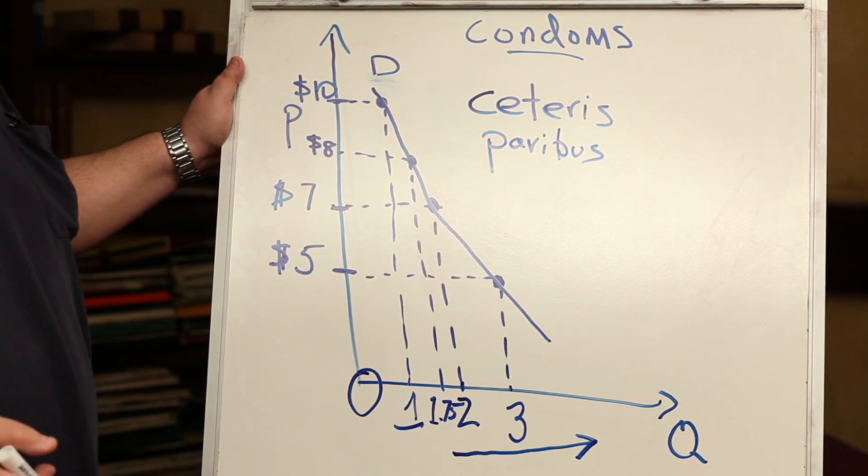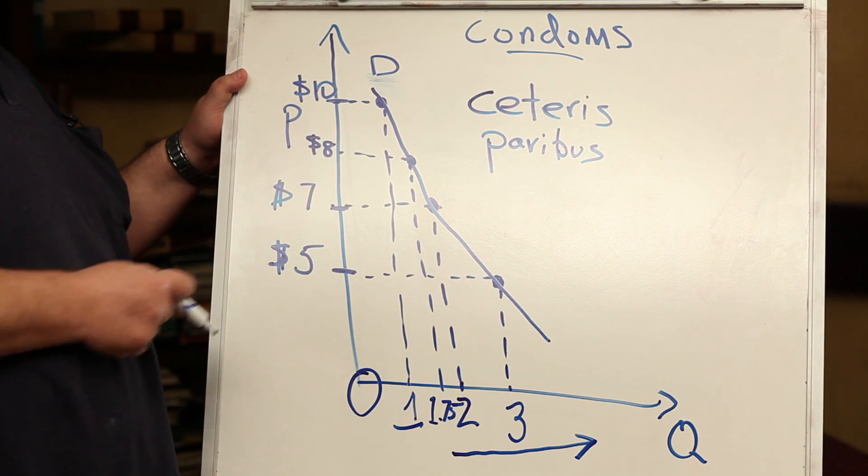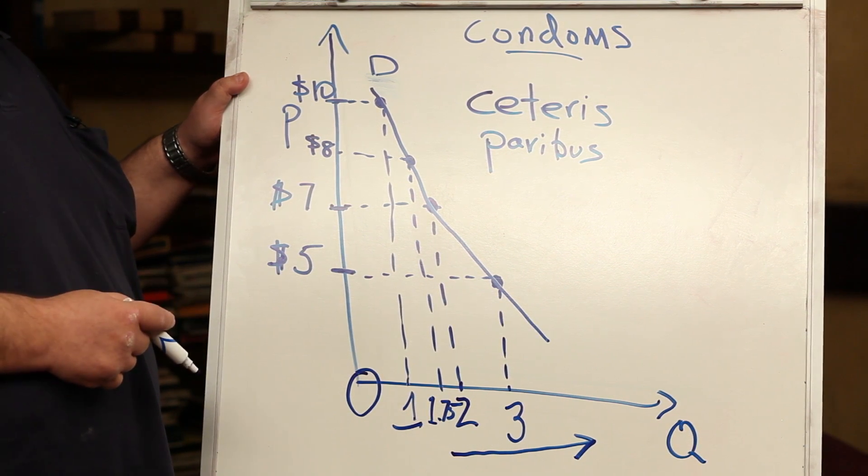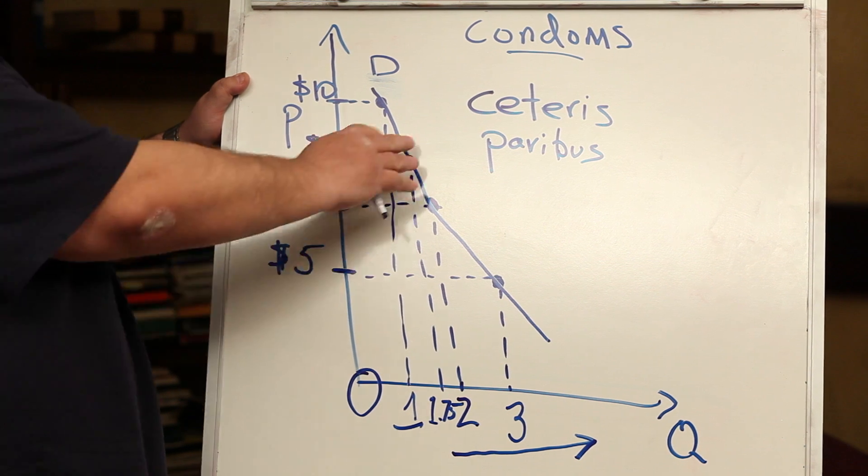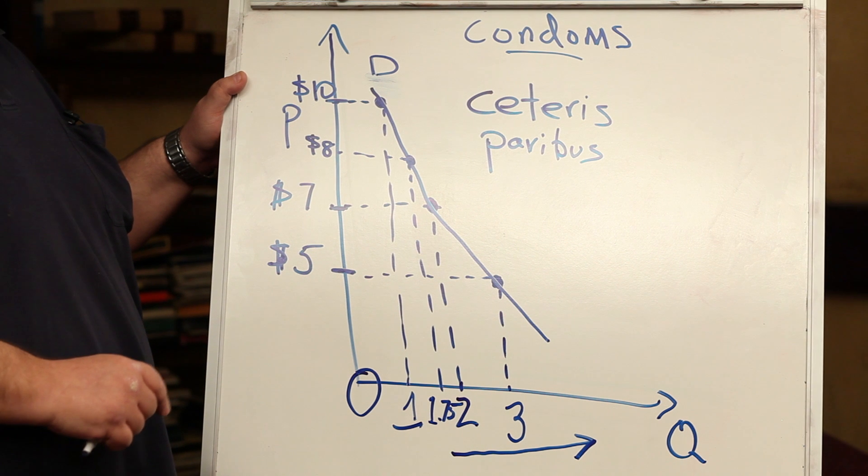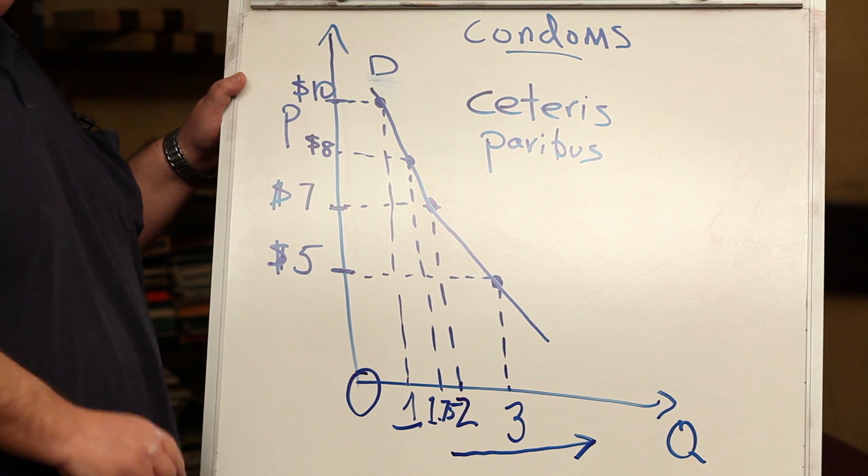I'll give you a quick example. Wouldn't your demand for condoms be affected by your income? Let's say that you made twice as much as you make today. This relationship would need to be redrawn.